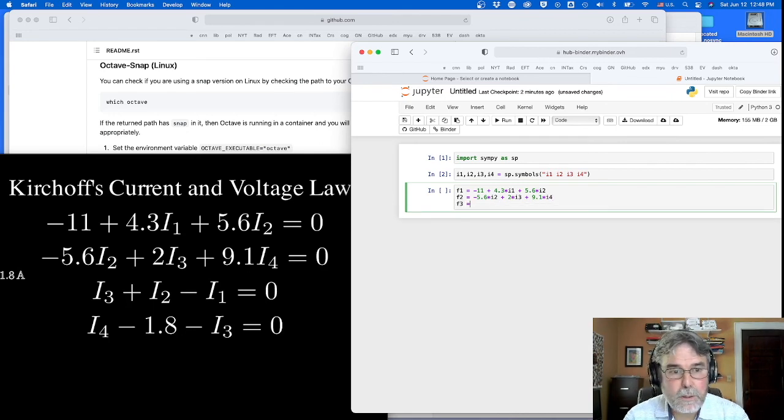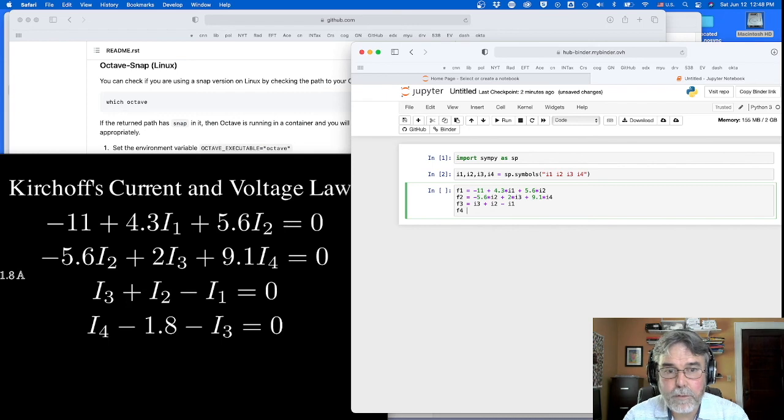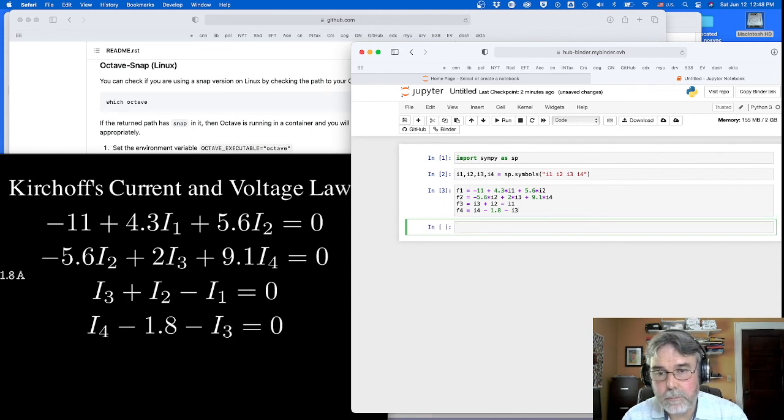The third function is I3 plus I2 minus I1. And the fourth function is I4 minus 1.8 minus I3. That's it. So I've literally just typed in the four equations. I've defined the four unknowns. And I can just ask SymPy to solve this. Solve the four equations F1, F2, F3, and F4.